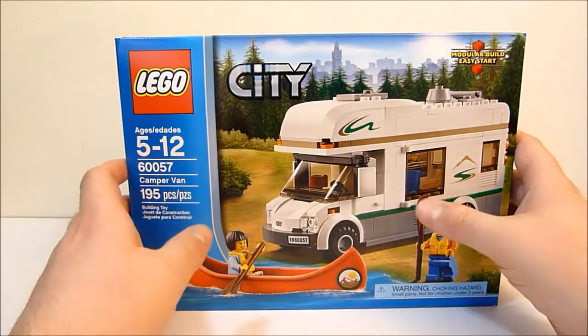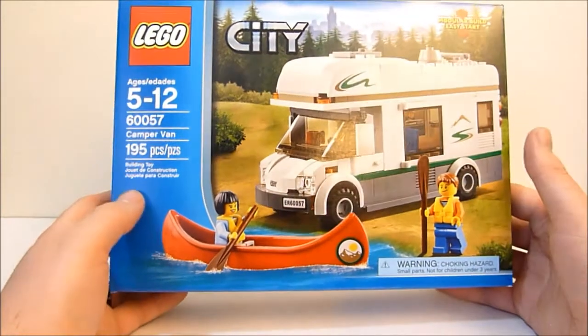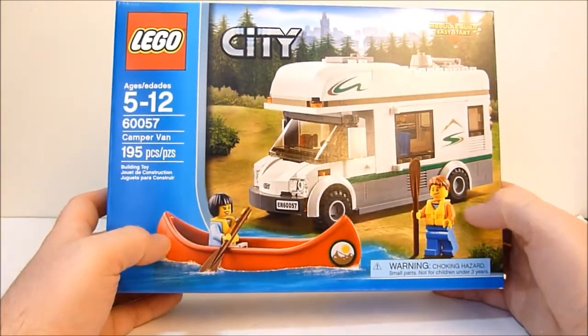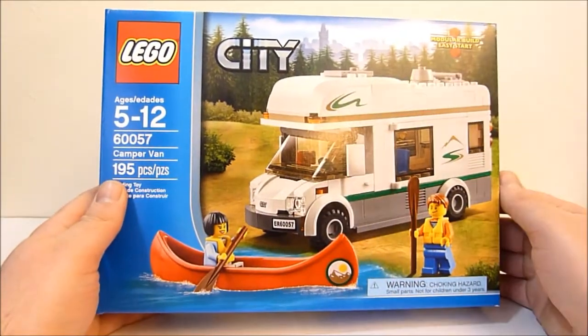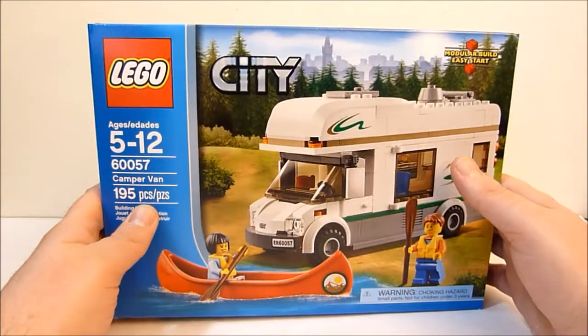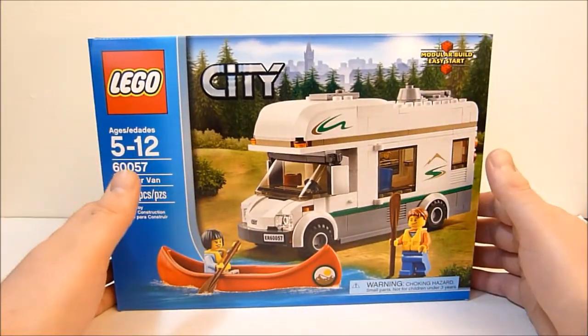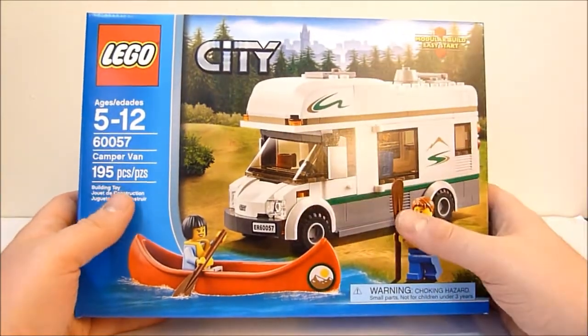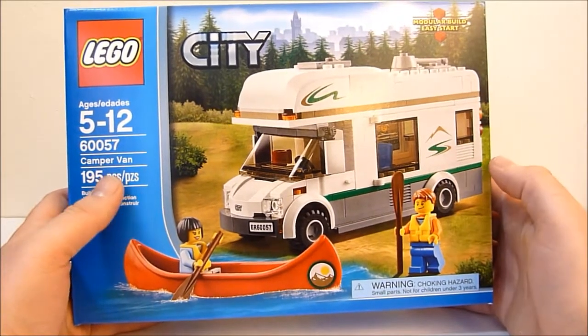As you can see, it's a camper van and you also get a nice little canoe with this thing as well as the two minifigs with the oars and the life jackets, very nice. I'm really loving the design of the camper van. I have the car and camper set from last year or the year before, the previous camper set, and I really love that set.